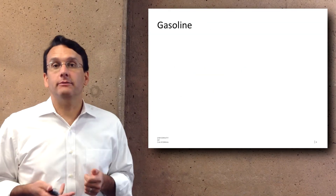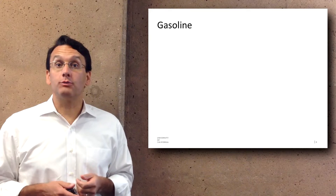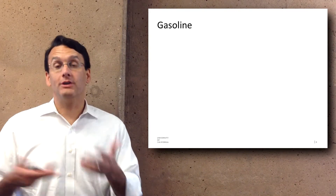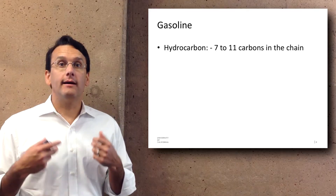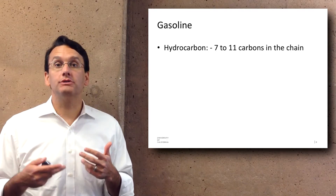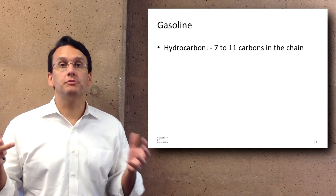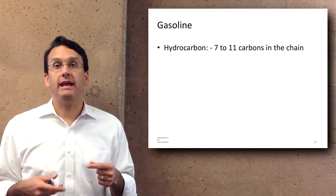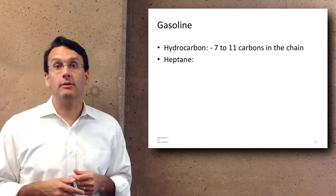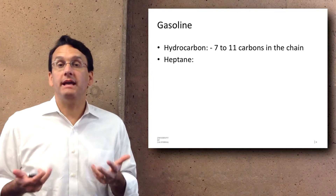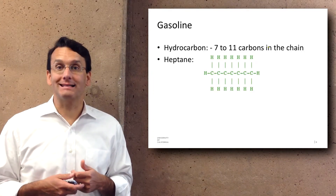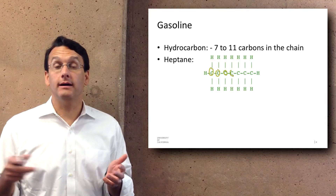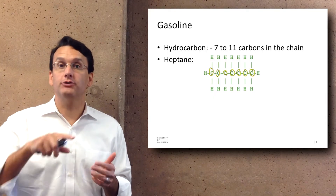So gasoline, which comes from oil, is one of the main energy sources that many of you encounter — it's what makes your car go. Gasoline is mostly composed of hydrocarbons, which are groups of carbon atoms attached in a chain with a bunch of hydrogen atoms around them. For example, heptane, which is one of the things that makes up gasoline, is seven carbon atoms attached to each other with a bunch of hydrogens around them.